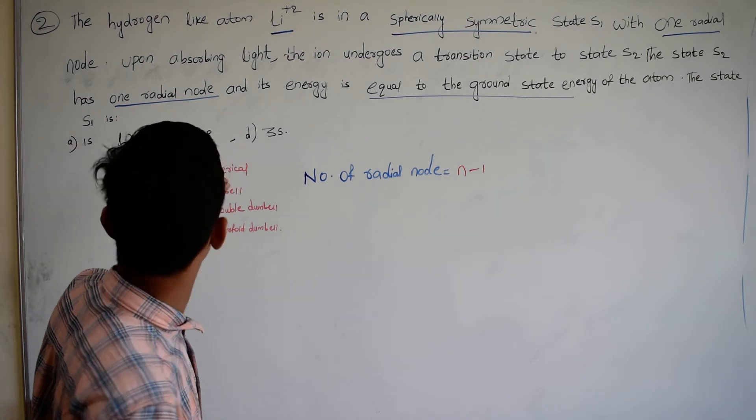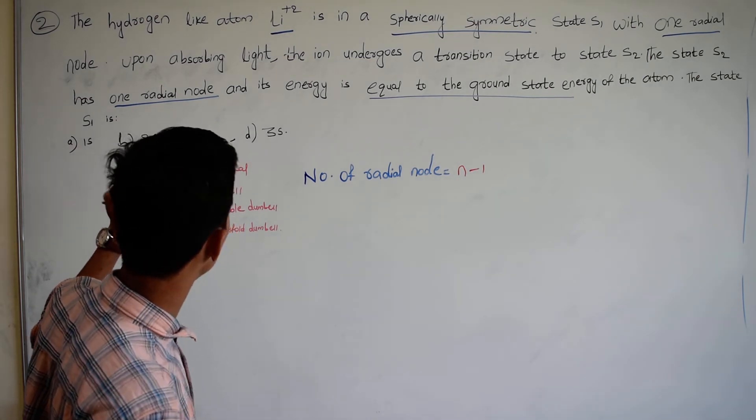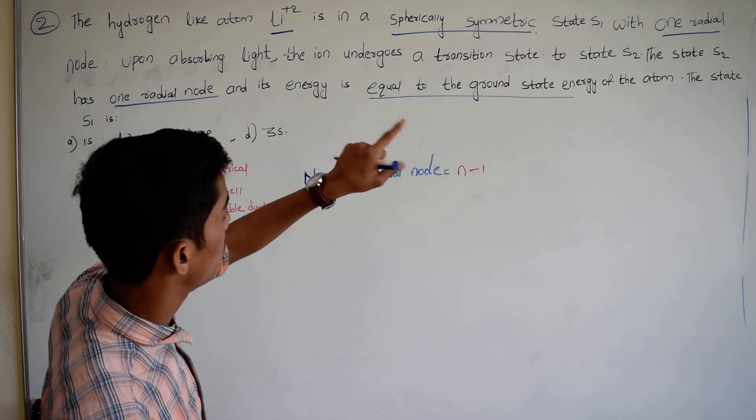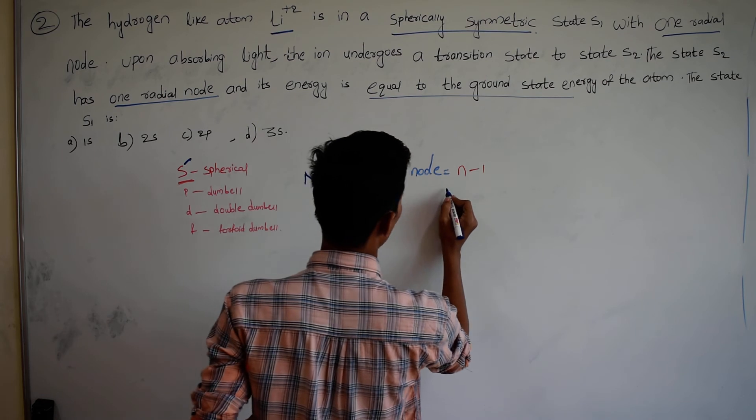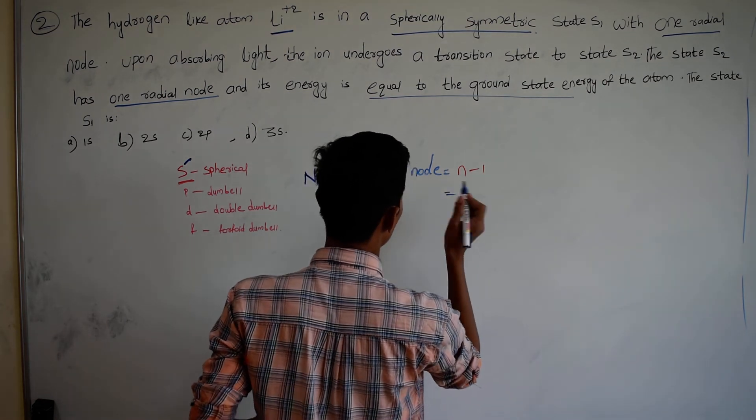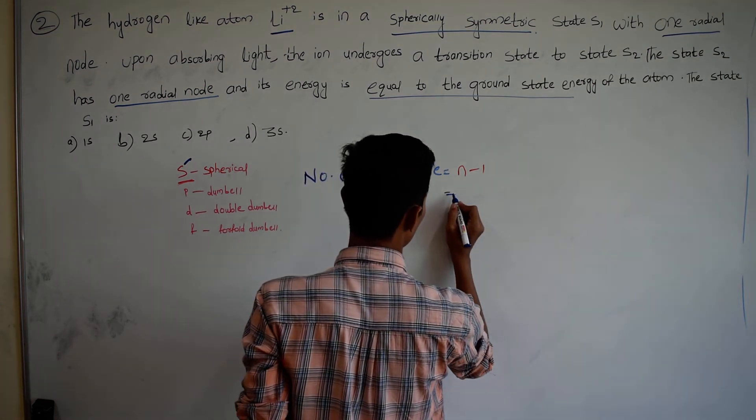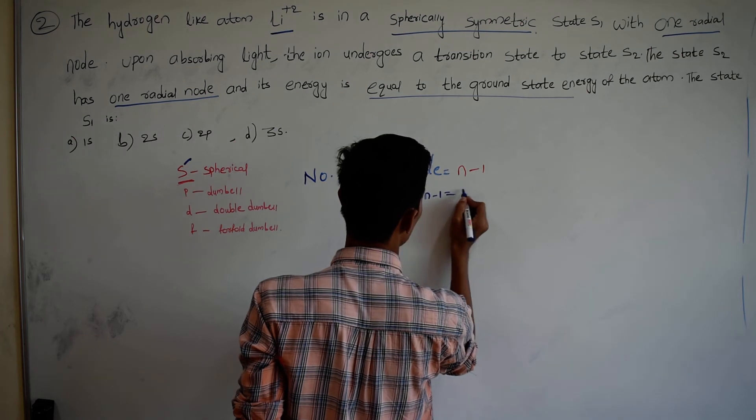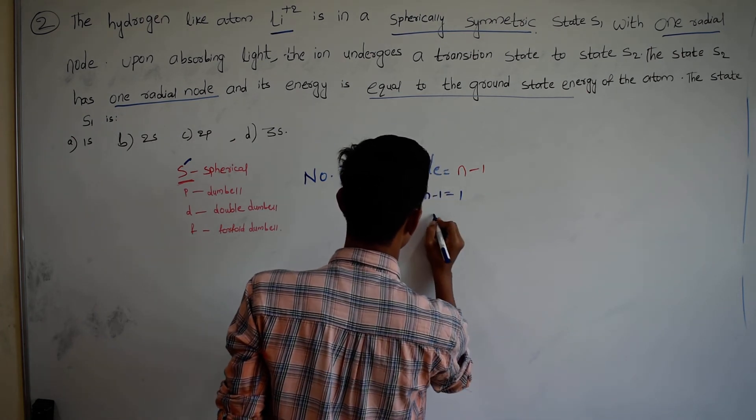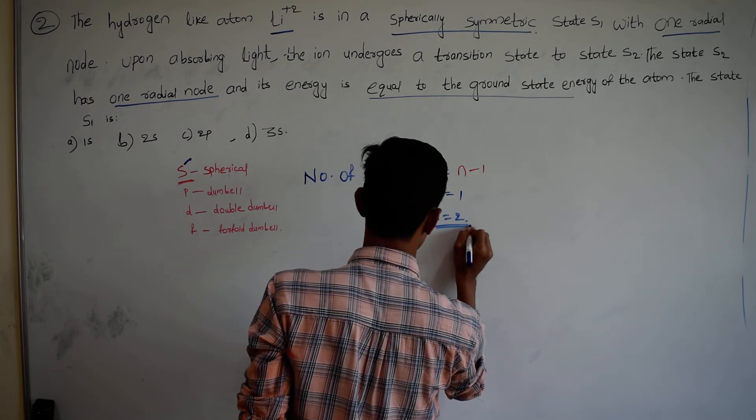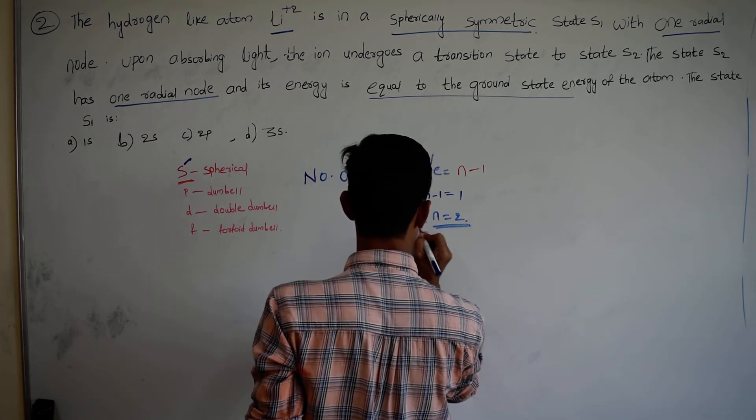The state S2 is 1 radial node. The state S1 is 1 radial node. We have 1 radial node, so n minus 1 equals 1. Therefore n equals 2. Here is radial node. We have n equals 2.